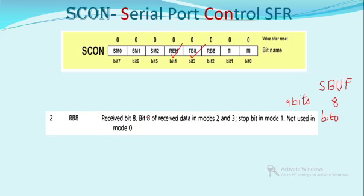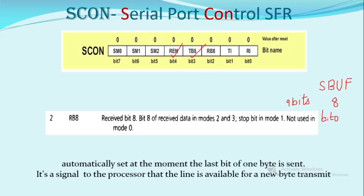Similarly, RB8 is the received bit 8. When receiving data in modes 2 and 3, nine bits arrive — eight bits are stored in the SBUF while the additional one bit is stored as RB8. In mode 1, RB8 acts as a stop bit. In mode 0 it is not used. RB8 is automatically set at the moment the last bit of one byte is received, signaling to the processor that the line is available for a new byte transfer.